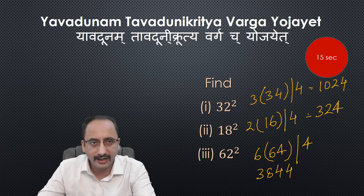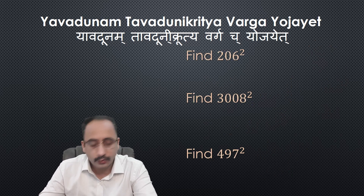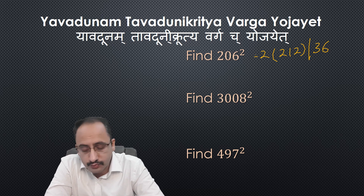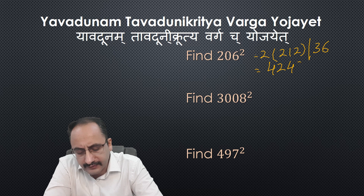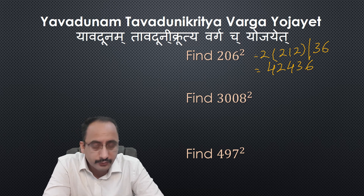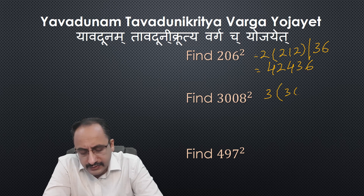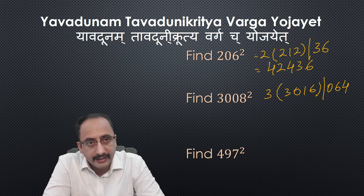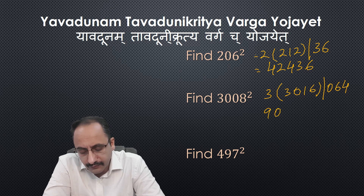Let's take some harder problems. First: square of 206. Sub base is 2, base is 100. Number plus deficit is 206 plus 6 which is 212, and square of 6 is 36. Since 100 has two zeros we write 2 digits in the second part. So 2 times 212 is 424, and appending 36 gives 42436 — the square of 206. Next: square of 3008. I take base as 1000, sub base as 3. Number plus deficit is 3008 plus 8 which is 3016, and square of 8 is 64. Since base is 1000 I write 3 digits: 064. So the answer is 3 times 3016 appended with 064, giving 9048064.